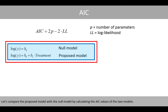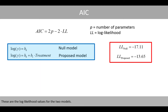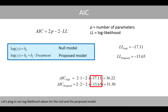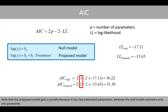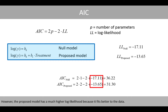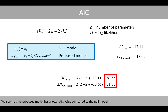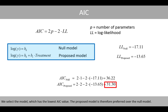Let's compare the proposed model with the null model by calculating the AIC value of the two models. Using the log likelihood values for the two models, we plug in our values for the null and the proposed model. Note that the proposed model gets a penalty because it has two estimated parameters, whereas the null model estimates only one parameter. However, the proposed model has a much higher log likelihood because it fits better to the data. We see that the proposed model has a lower AIC value, so the proposed model is preferred over the null model.